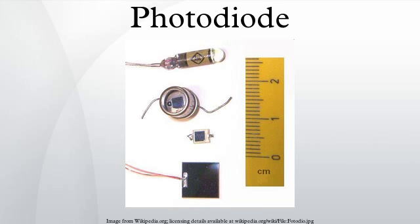Materials commonly used to produce photodiodes include silicon and germanium. Because of their greater bandgap, silicon-based photodiodes generate less noise than germanium-based photodiodes.